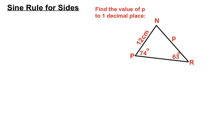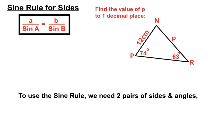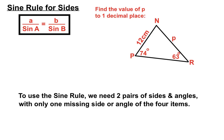Let's have a look at an example. This question asks us to find the value of p to one decimal place. We have sides and angles n, p, and r. The lowercase p is opposite the uppercase angle P. To use the Sine Rule we need two pairs of sides and angles that are related to each other, with only one of them being the missing one. The missing side p is directly opposite the capital P angle of 74 degrees.